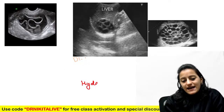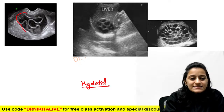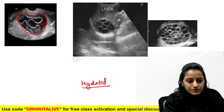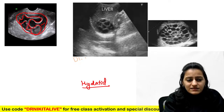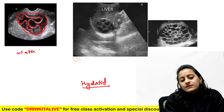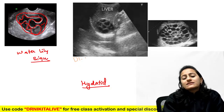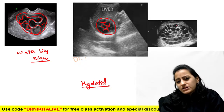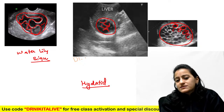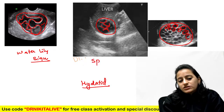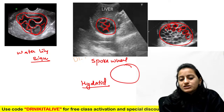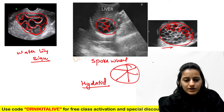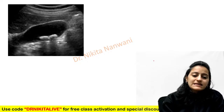Hydatid cyst: the first image shows a cystic (black on ultrasound) lesion with a floating membrane — the water lily sign — indicating a ruptured hydatid cyst. The second image shows a cyst-within-cyst appearance — a mother cyst with multiple daughter cysts — giving the spoke wheel or honeycomb appearance, also characteristic of hydatid cyst.